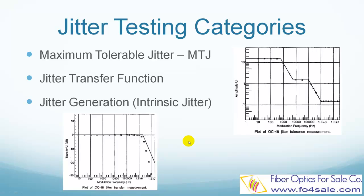SONET and SDH standards specify the jitter requirements at the optical interface. The transmission equipment jitter specifications are organized into three categories: maximum tolerable jitter, jitter transfer function, and jitter generation. Jitter tolerance measures how well the receiver can tolerate a jittered incoming signal. For telecom equipment, jitter tolerance is specified using a jitter tolerance template, which defines the region over which the equipment must operate while maintaining a better-than-specified bit-error ratio performance. This figure shows the OC48 jitter tolerance template.